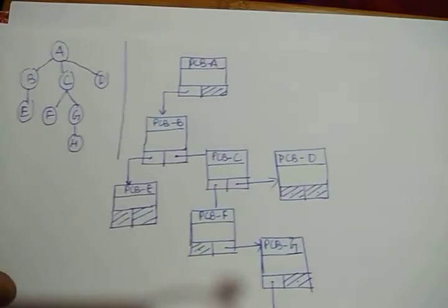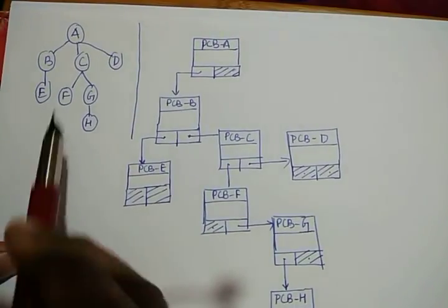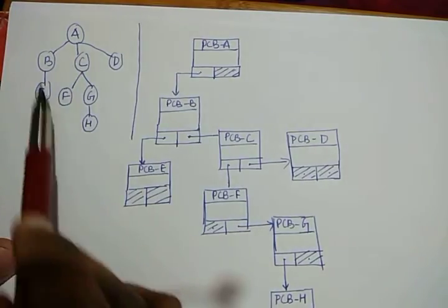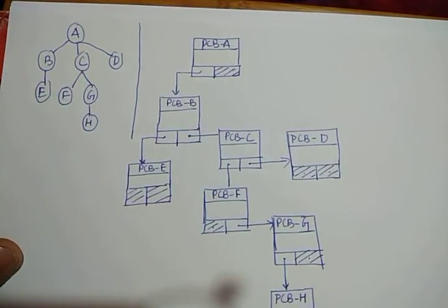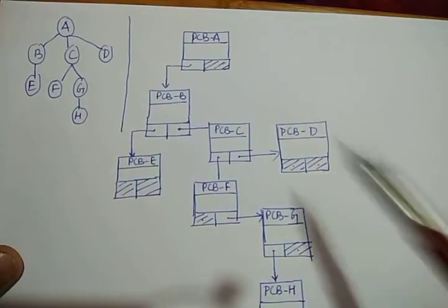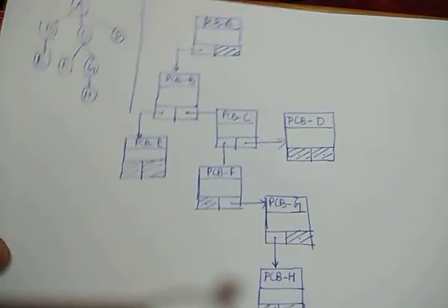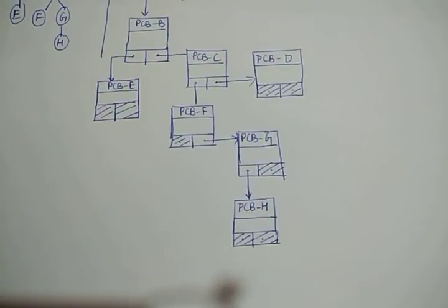So this is how process hierarchies are maintained in the operating system with the help of PCBs. The process creation hierarchy we discussed is maintained in the operating system through these linked PCBs with shaded null fields as shown. Thank you so much. In the next lecture we will discuss the next operating system service, which is called process termination, and its related system calls.